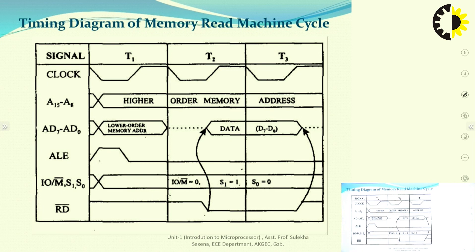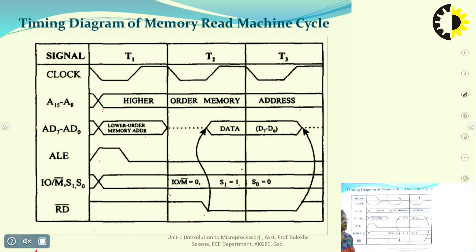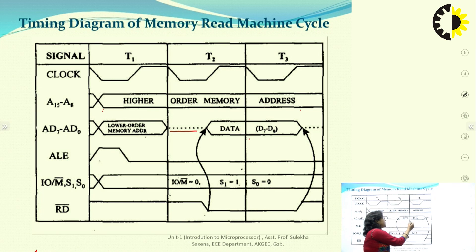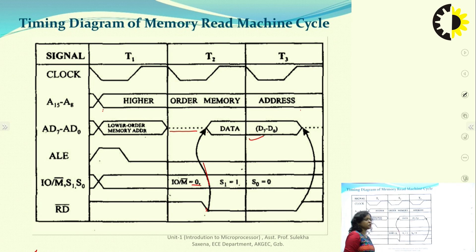The timing diagram for the memory read machine cycle shows 3 clock cycles T1, T2, T3. Higher order address is loaded from T1 to T3; for AD0–AD7, during T1 the low-order memory address is loaded, followed by a floating state waiting for data, then during T2 and T3 data is available. R̄D̄ is low during T2 and T3. IO/M̄ is 0 for memory read or 1 for IO read. For read, S1 and S0 are 1 and 0; ALE is 1 during T1.